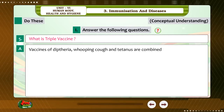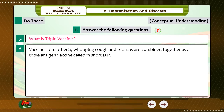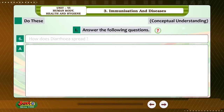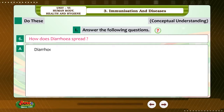Question 5: What is triple vaccine? Answer: Vaccines of diphtheria, whooping cough, and tetanus are combined together as a triple antigen vaccine called, in short, DPT.